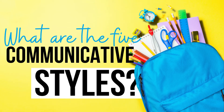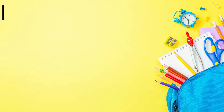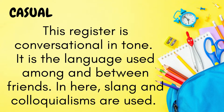What are the five types of communicative styles? The first one is casual. This register is conversational in tone. It is the language used among and between friends. Slang and colloquialisms are used. This uses group language, so only members of the group can understand it. Nicknames are also used in addressing one another. Examples are shown.